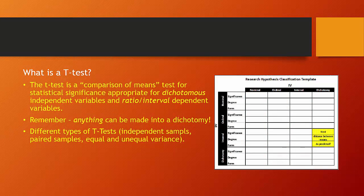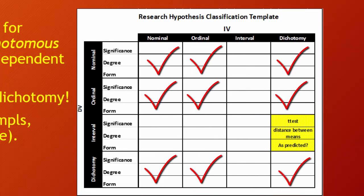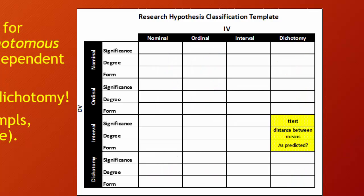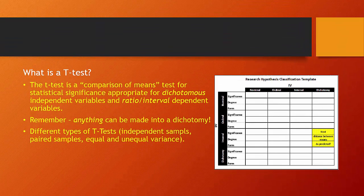Let's start by looking at our research hypothesis classification template. We've learned a variety of things with the chi-square statistic and our measures of association with tau b, gamma, Cramer's V, and phi. The t-test deals with one specific box within our classification template where our independent variable is dichotomous and our dependent variable is at the interval or ratio level. Because our dependent variable is measured at the interval/ratio level, some of the best statistics we can generate include things like means.